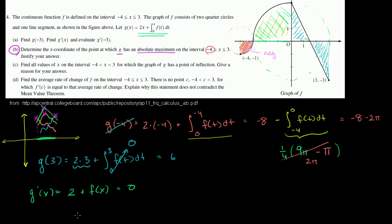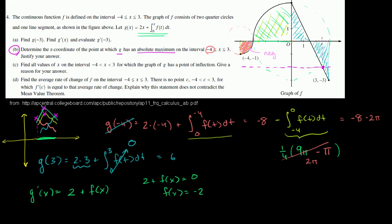Setting g prime of x equal to 0 gives 2 plus f of x equals 0, so f of x equals negative 2. We need to find where f of x equals negative 2. Drawing the line y equals negative 2 on the graph, f of x only equals negative 2 at one point — it looks like around x equals 2 and a half. Let's find the exact value.